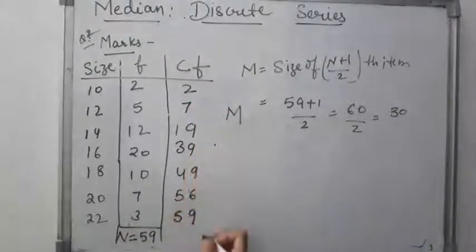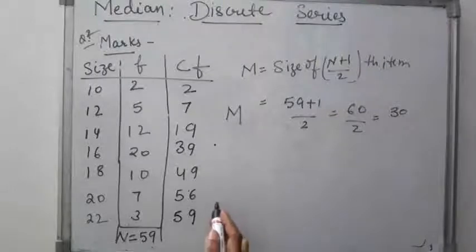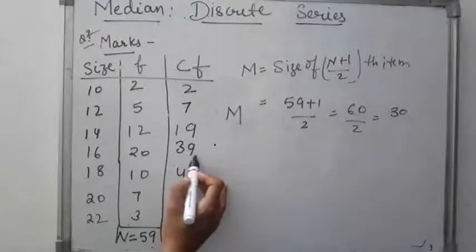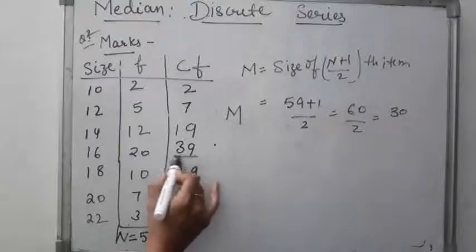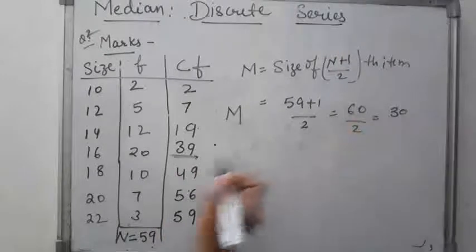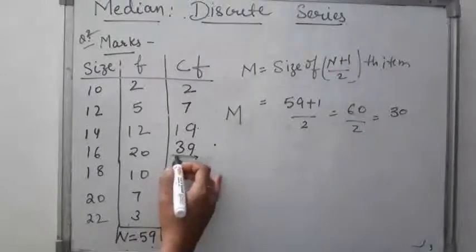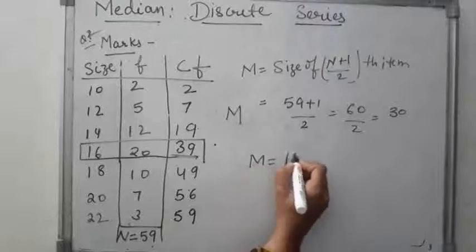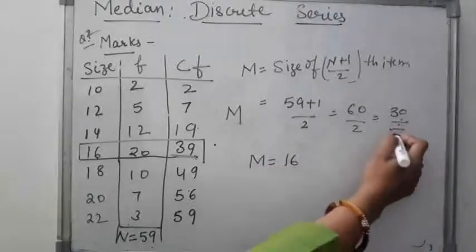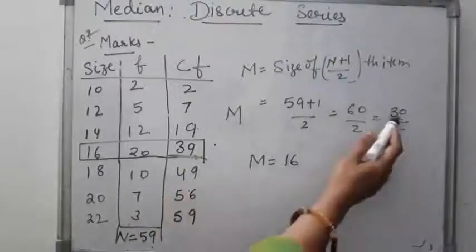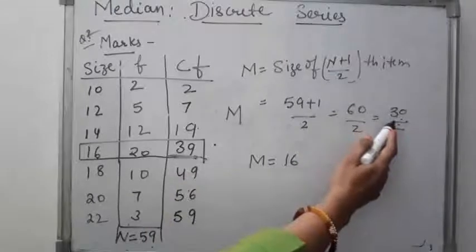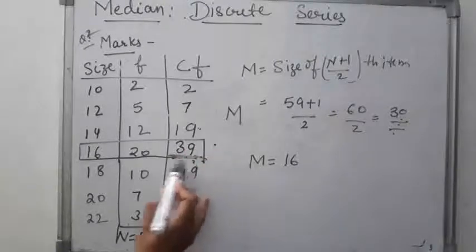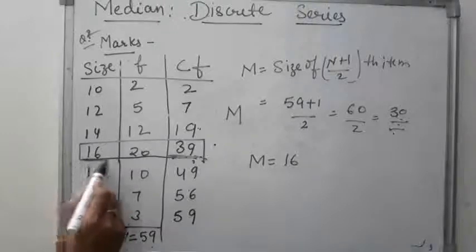We look at where 30 falls in the cumulative frequency column. The 30th item must correspond to a CF value equal to or greater than 30. Since 19 is too small, the next CF value is 39, which covers the 30th item. The corresponding size of item is 16, so the median of this discrete series is 16.